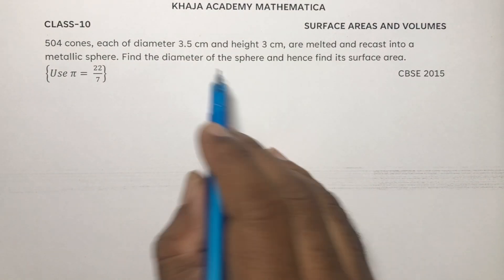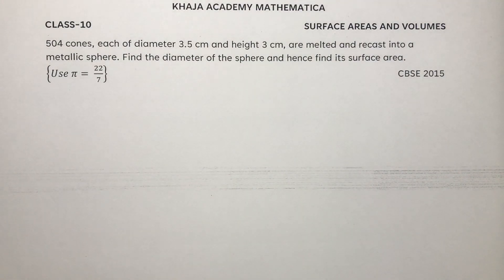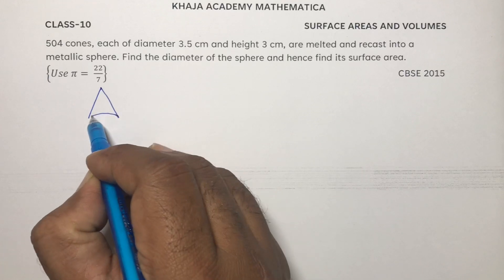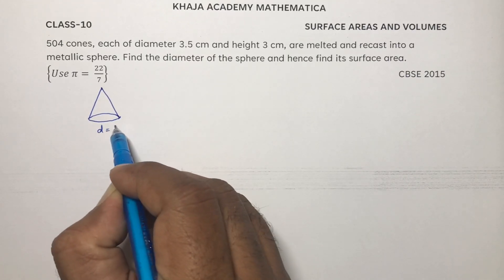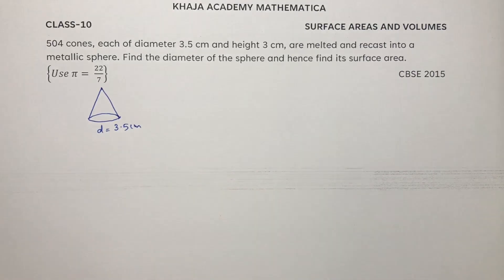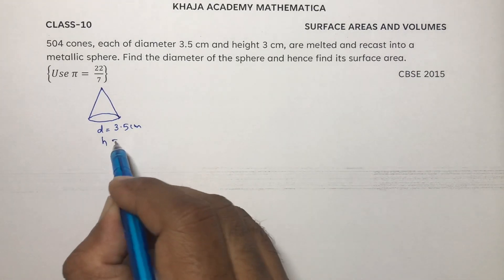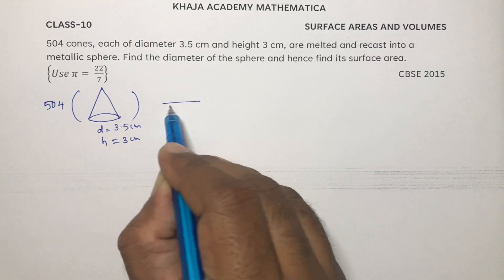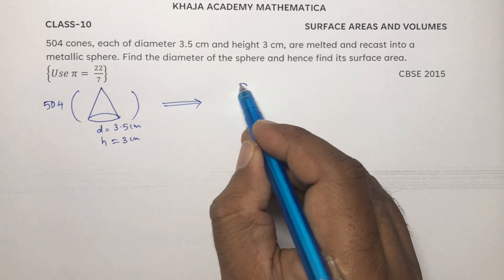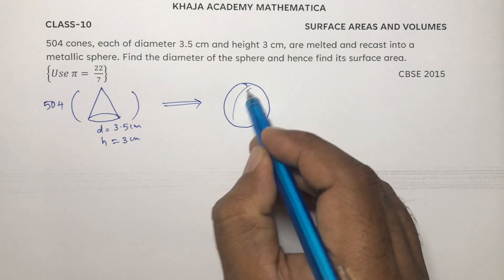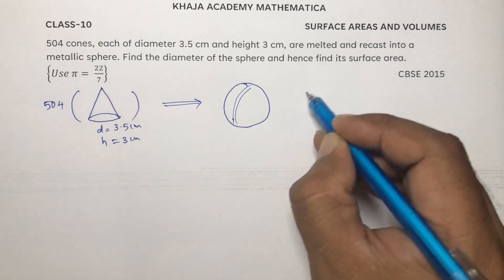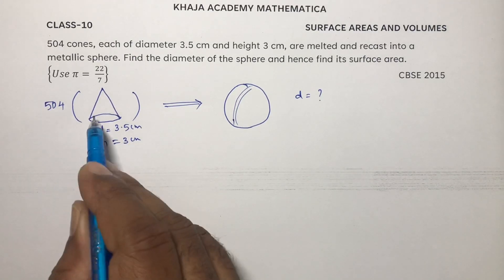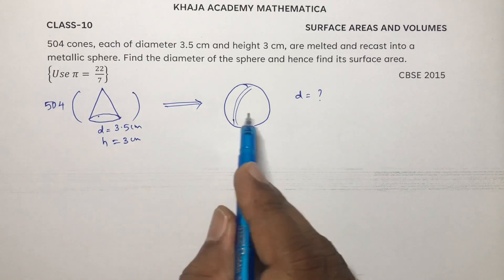504 cones, each of diameter 3.5 centimeters and height 3 centimeters, are melted and recast into a metallic sphere. We need to find the diameter of the sphere. Since the cones are melted and recast, the volume will be the same: volume of 504 cones equals volume of the sphere.